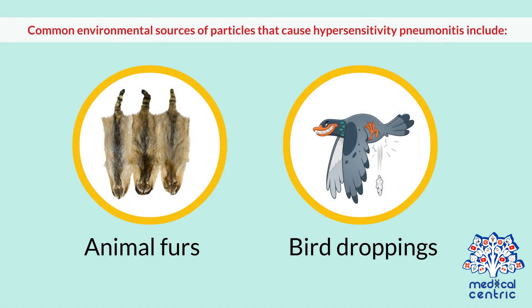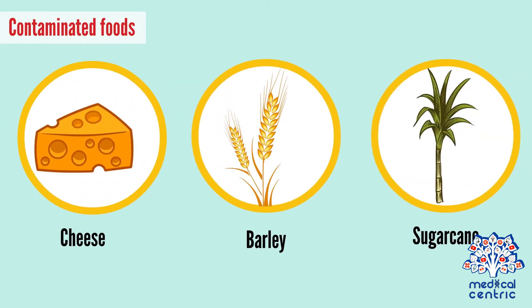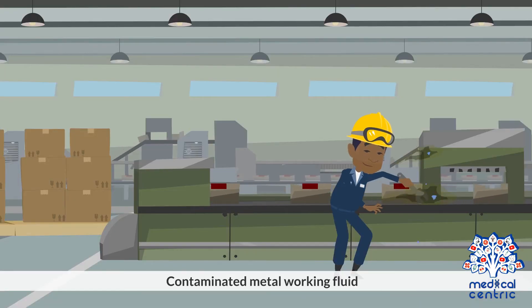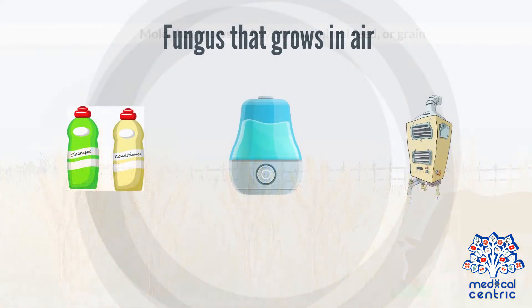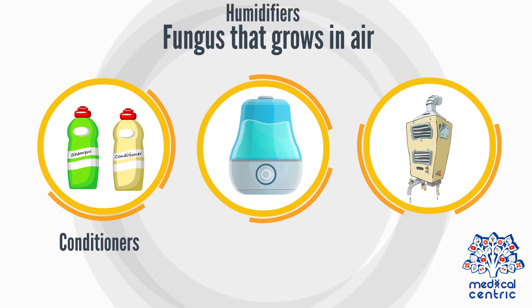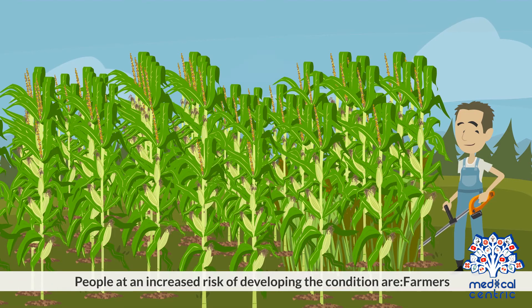Common environmental sources of particles that can cause hypersensitivity pneumonitis include animal furs, bird droppings and feathers, contaminated foods such as cheese, barley, and sugarcane, contaminated metal working fluid, mold that grows on hay, straw, animal feed, or grain, fungus that grows in air conditioners, humidifiers, and heating systems, and bacteria in water vapor from hot tubs.